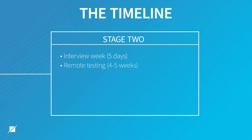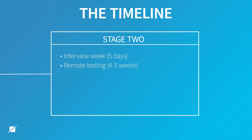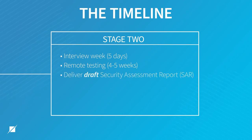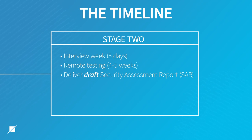From there, we move into four to five weeks of remote testing, where we're doing deep dives of all of the evidence provided. We're documenting those testing procedures in our test case procedure workbook, which is a deliverable within the FedRAMP program. And then from there, we deliver the draft SAR — the security assessment report. Throughout this lifecycle, we're having weekly status meetings.